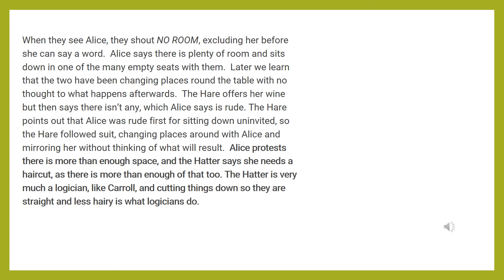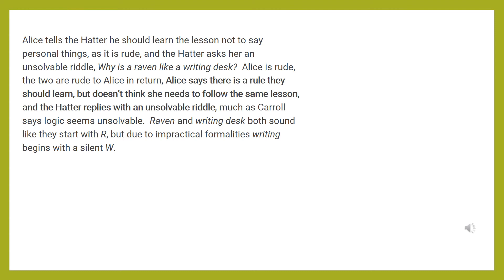Alice protests there is more than enough space, and the Hatter says she needs a haircut, as there is more than enough of that too. The Hatter is very much a logician like Carroll, and cutting things down so they are straight and less hairy is what logicians do. Alice tells the Hatter he should learn the lesson not to say personal things, as this is rude, and the Hatter asks her an unsolvable riddle: 'Why is a raven like a writing desk?' The two are rude to Alice in return. Alice says there is a rule they should learn, but doesn't think she needs to follow the same lesson, and the Hatter replies with the unsolvable riddle — much as Carroll suggests logic seems unsolvable.